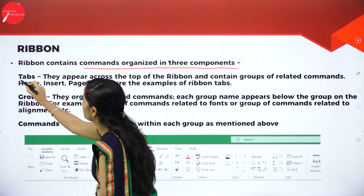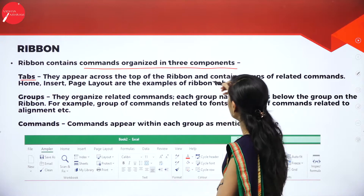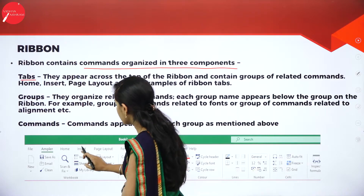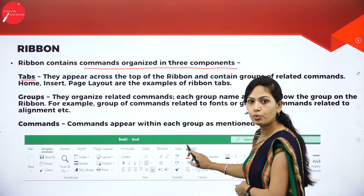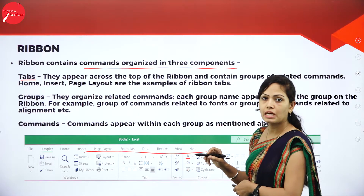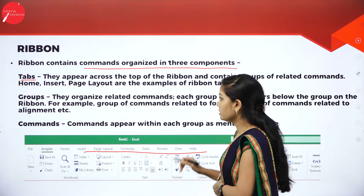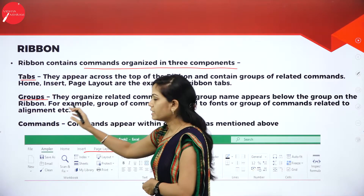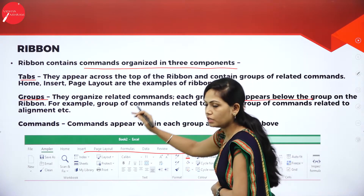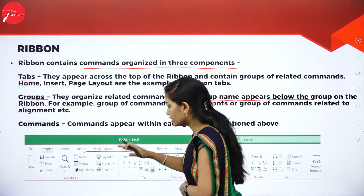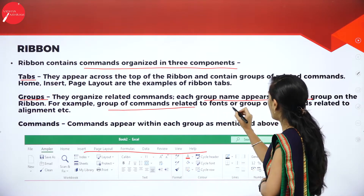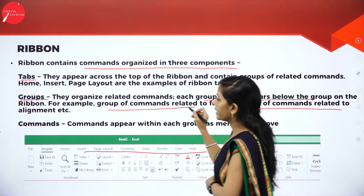What are Tabs? Tabs appear across the top of the ribbon and contain groups of related commands: Home, Insert, Page Layout, Formulas, Data, Review, View, and Help. These are the tabs available in the Ribbon. Groups organize related commands, and each group name appears below the group on the ribbon. For example, a group of commands related to fonts, or a group of commands related to alignment.